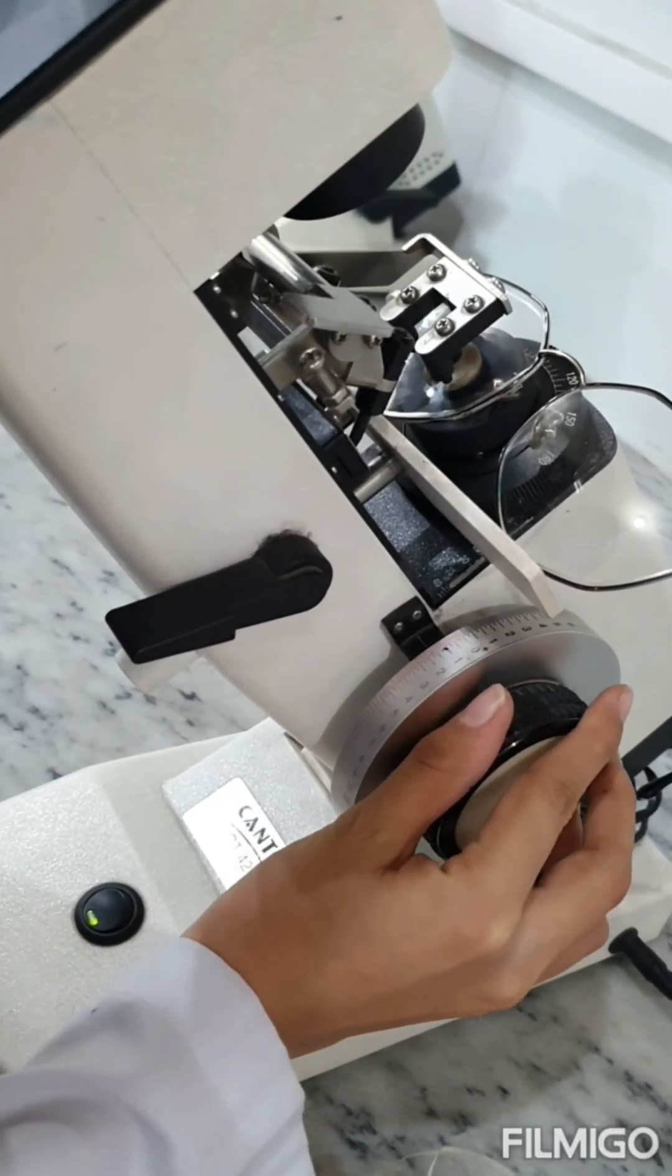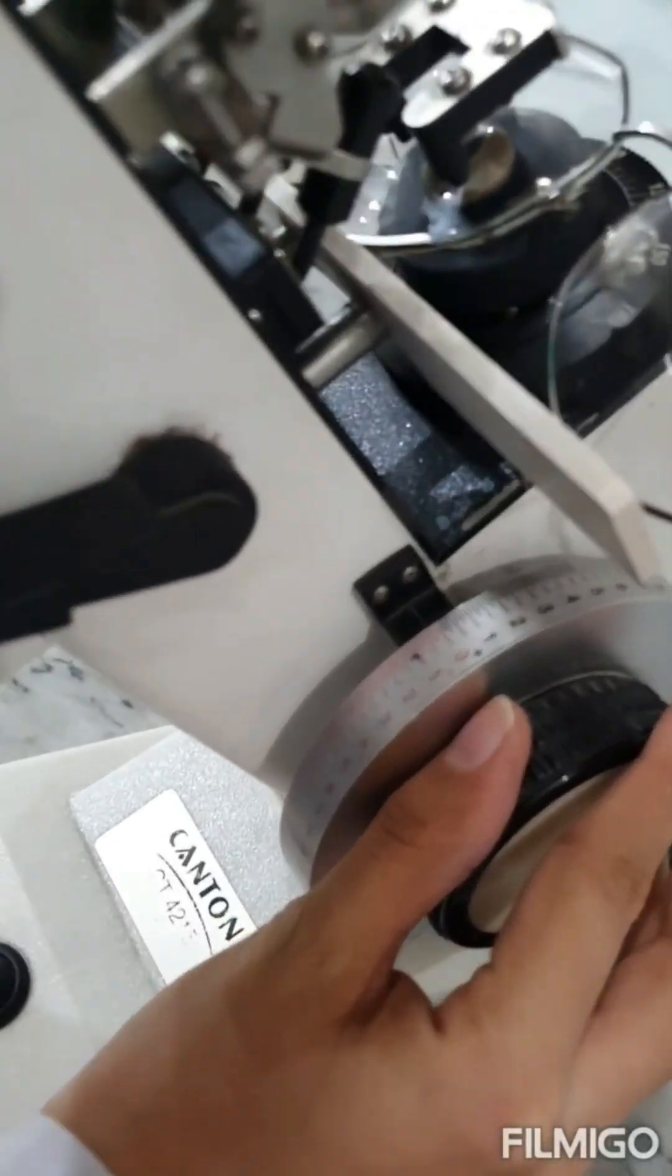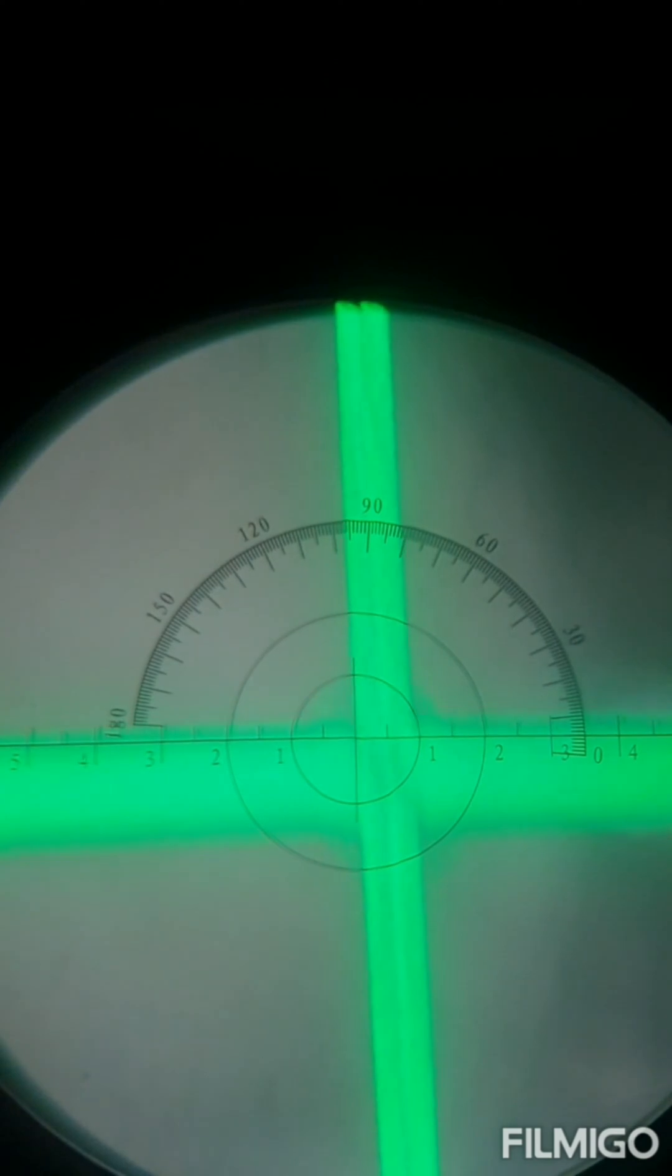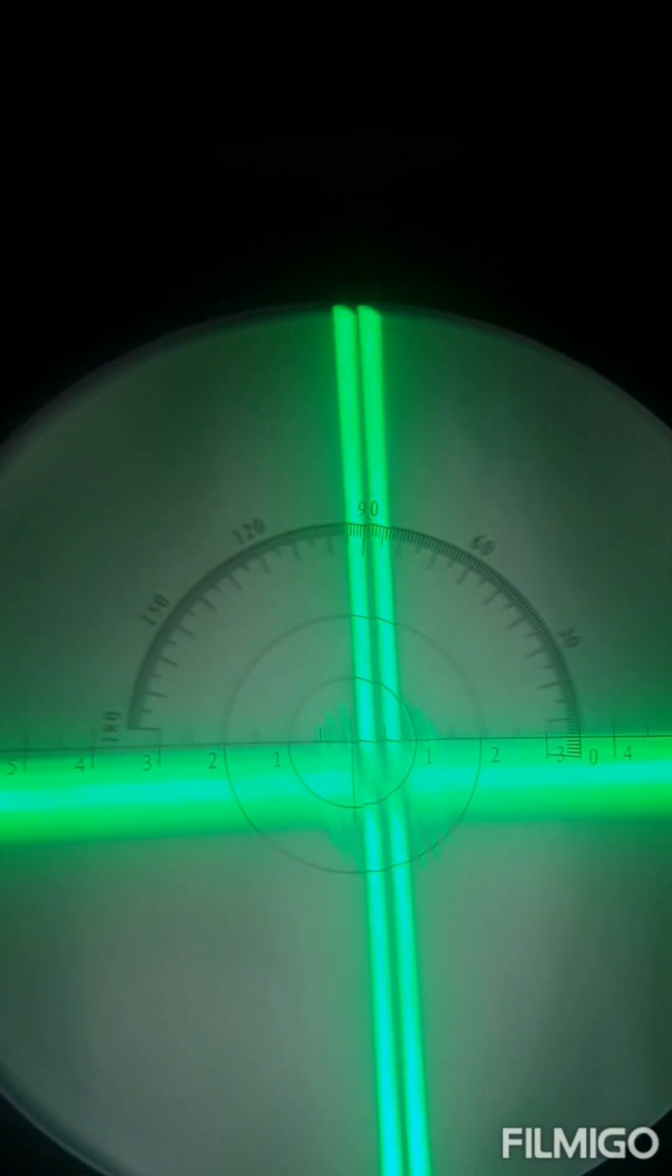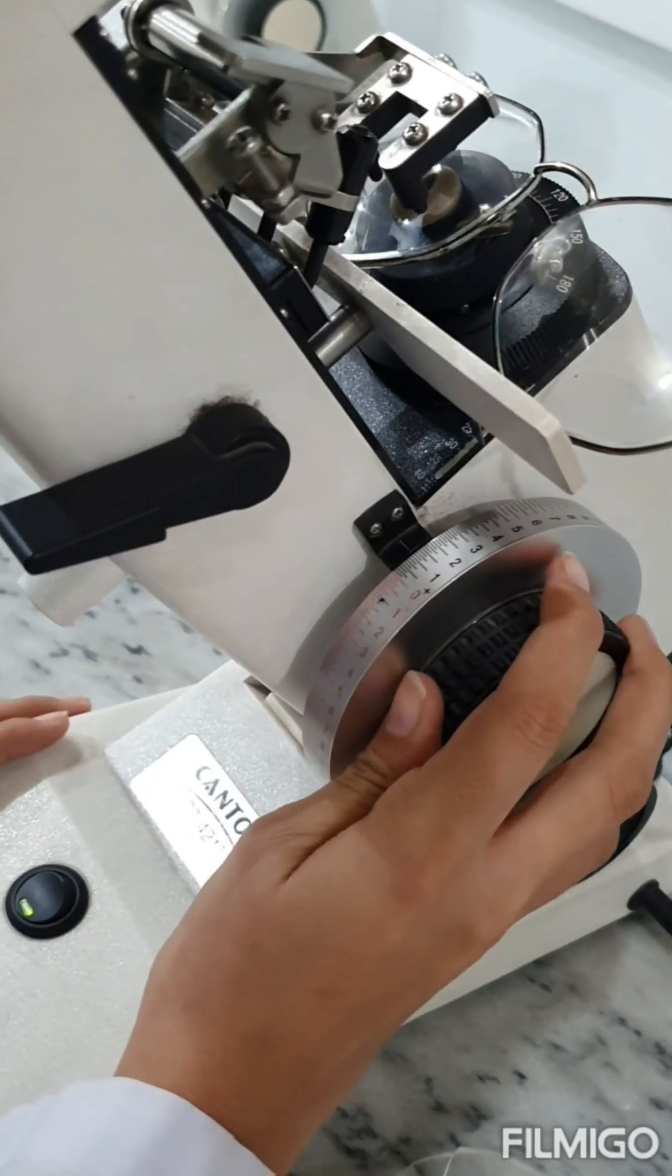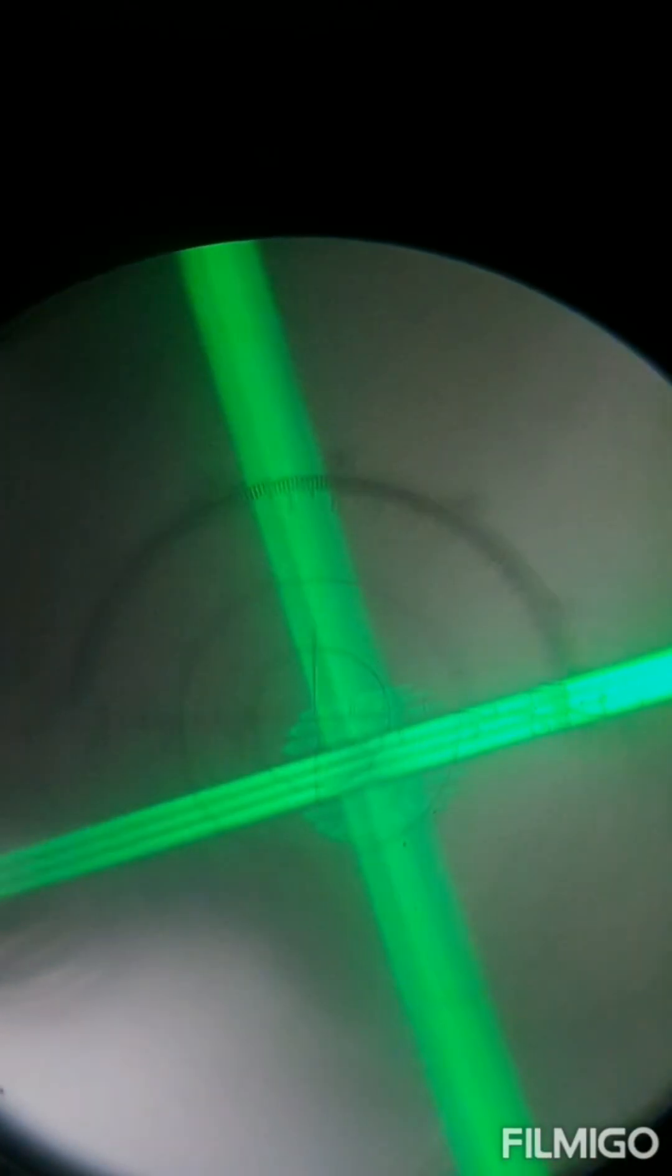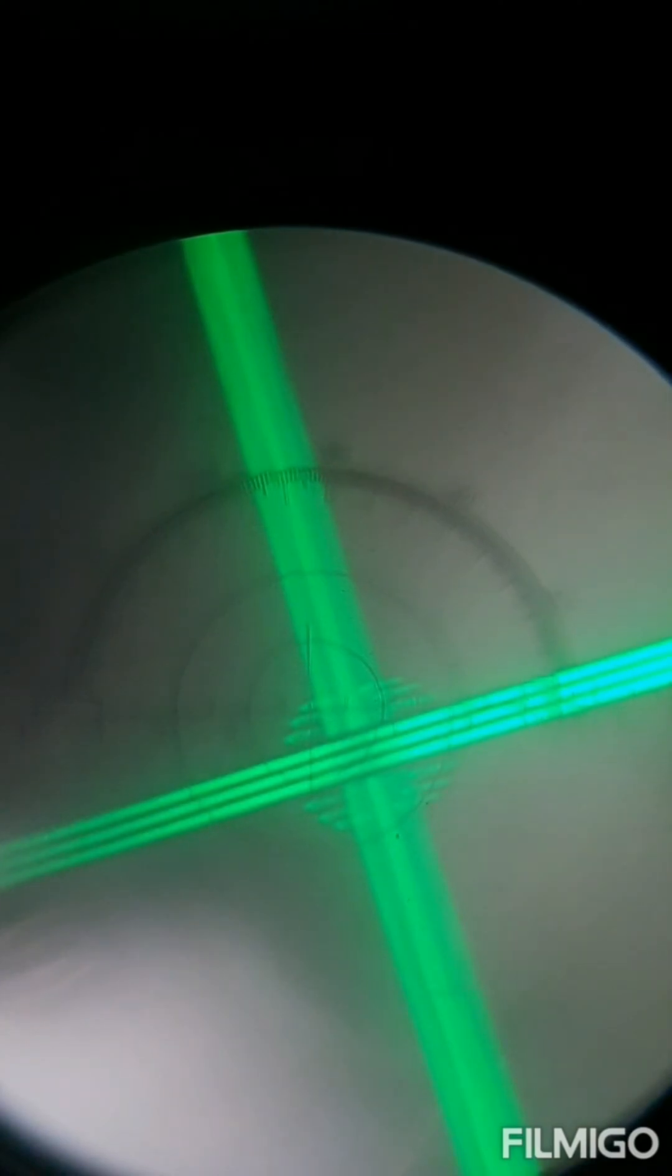You can see from the eyepiece that the vertical meridian is now clear and sharp. While observing from the eyepiece, again rotate the power drum so that the opposite meridian becomes clear and note the readings.